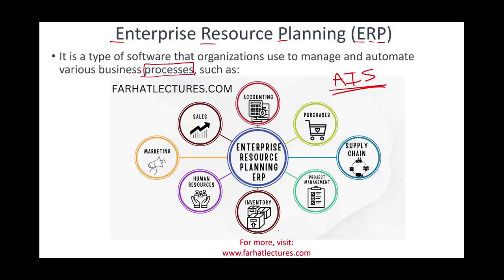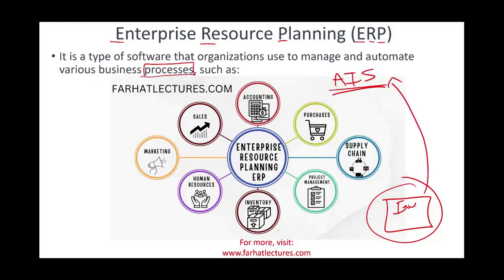Then we might have a separate software for our inventory, because the accounting information system simply doesn't track inventory. So we get another software to track inventory. The accounting information system tracks sales, while the inventory software tracks inventory and cost of goods sold.